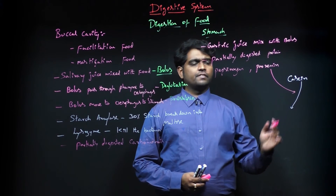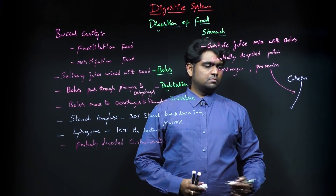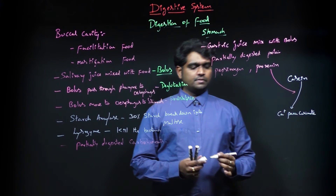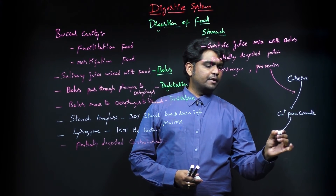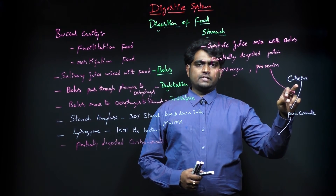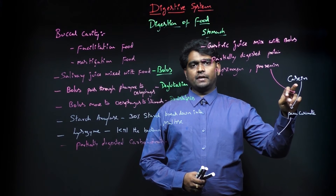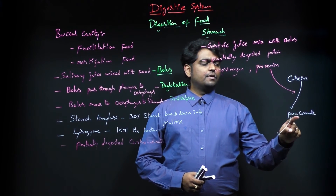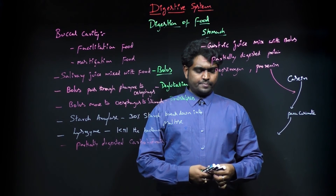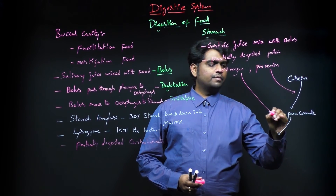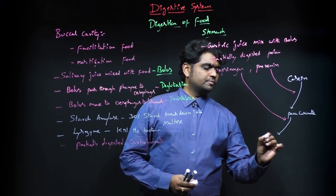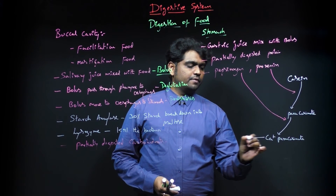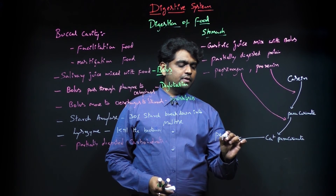Prorennin helps the digestion of casein into calcium paracaseinate. Pepsinogen plays a key role — it breaks down the paracaseinate into calcium paracaseinate, which continues to be broken down into disaccharide peptides. The mother's milk protein casein is broken down in this stepwise manner in the infant's stomach.